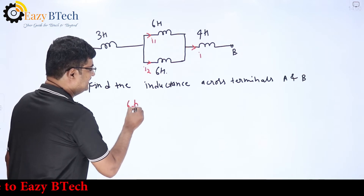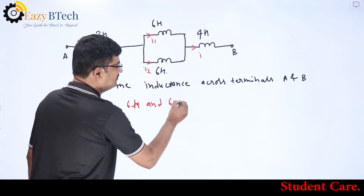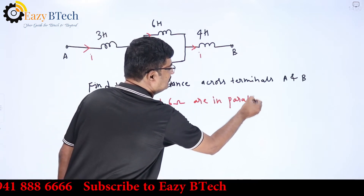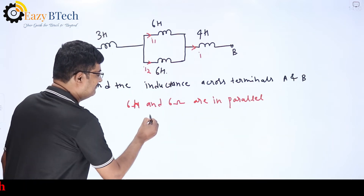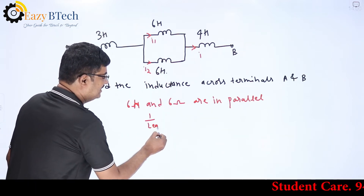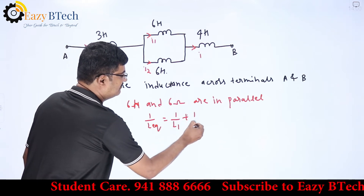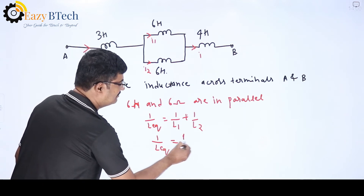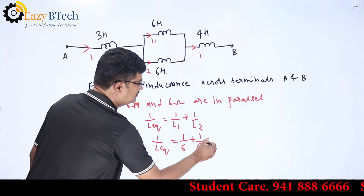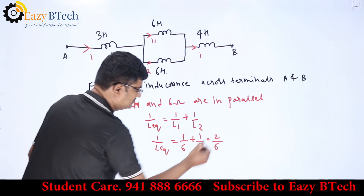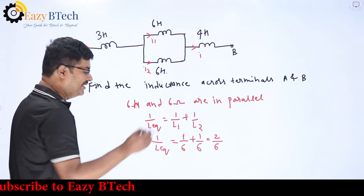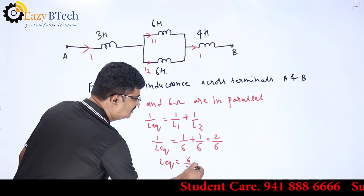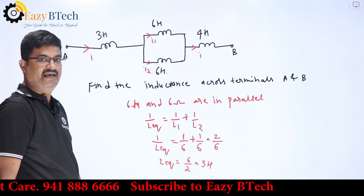Six Henry and six Henry are in parallel. According to the formula, 1 by L equivalent equals 1 by L1 plus 1 by L2. So 1 by L equivalent equals 1 by 6 plus 1 by 6, which equals 2 by 6. Therefore L equivalent equals 6 by 2, which is 3 Henry.